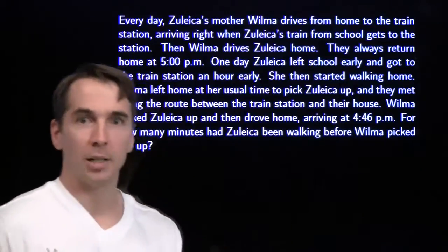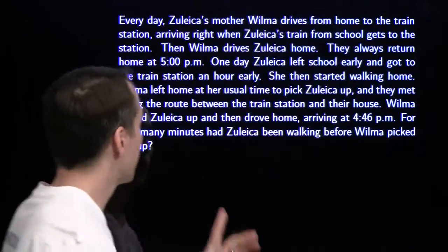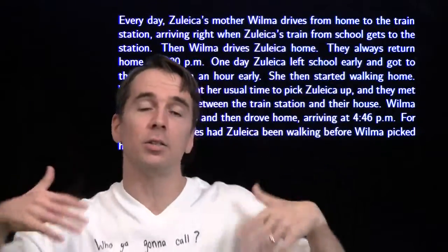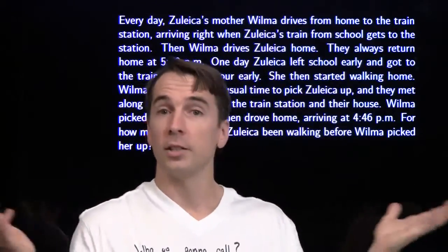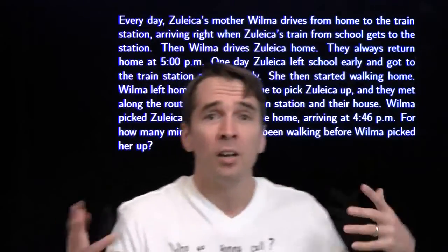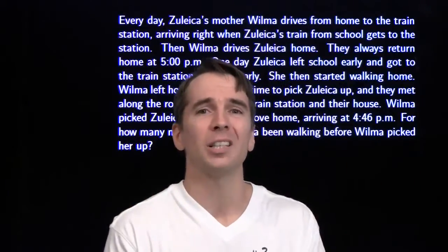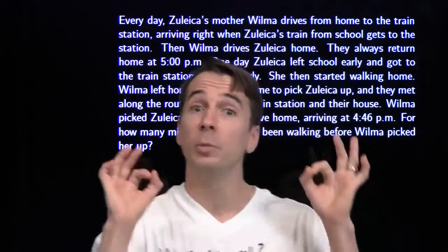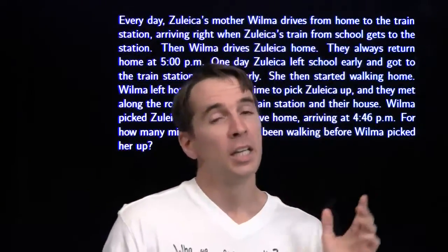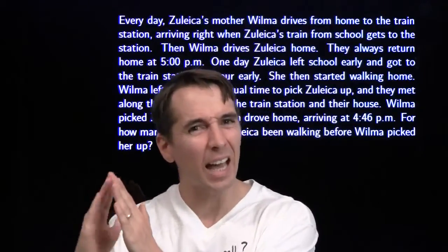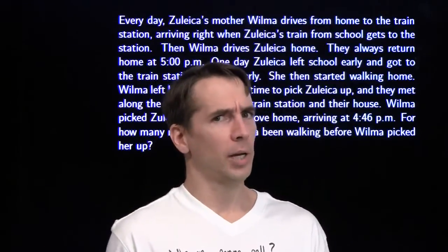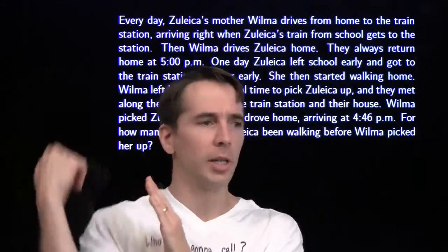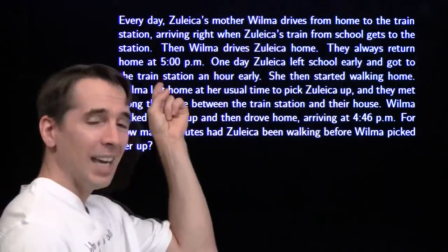First, let's make sure we understand the problem — this is one of my favorites. What's going on here is Zuleika, every day she gets on a train and goes home from school. And every day Vilma waits at home until just the right time, gets in her car, drives to the train station, picks Zuleika up, and then drives home. Vilma times her trip very carefully — she wants to get to the train station exactly when Zuleika gets there, because Vilma doesn't like waiting and she doesn't want Zuleika to wait either. So she always gets there right on time, Zuleika gets in, they drive home, and they get home at 5.